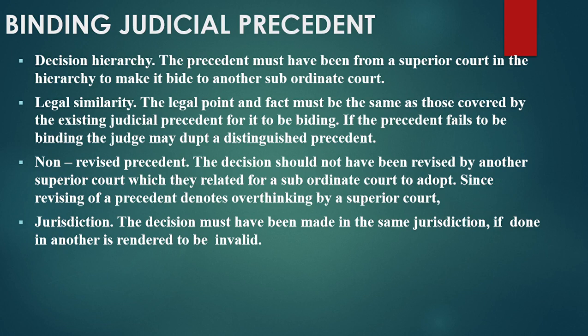Jurisdiction: the decision must have been made in the same jurisdiction. If made in another, it is considered invalid. So for a judicial precedent to be legally binding, it must be based on that jurisdiction. For example, if based on the Kenyan courts, it must be made in the Kenyan jurisdiction. A decision made in Uganda or the United States cannot be binding in Kenya.